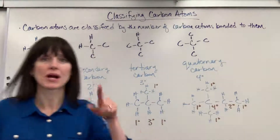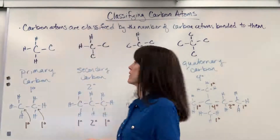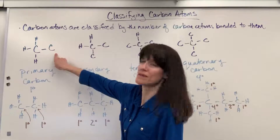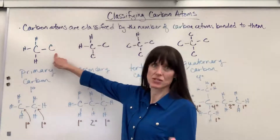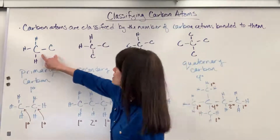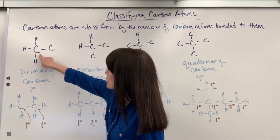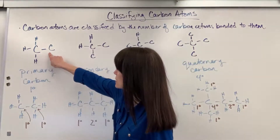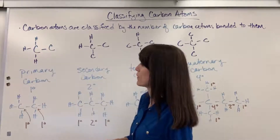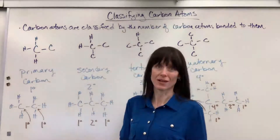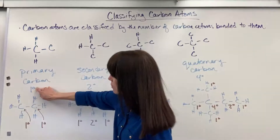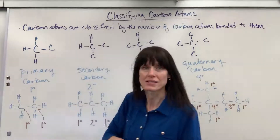First, a primary carbon. That is when there's one carbon attached to the next carbon. So here's your carbon that I'm going to focus on — it's attached to one carbon and has three hydrogens. We would call that a primary carbon. Notice how you denote this one with a little degree sign.